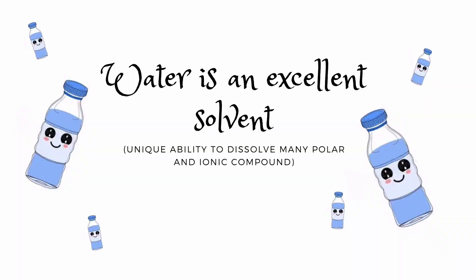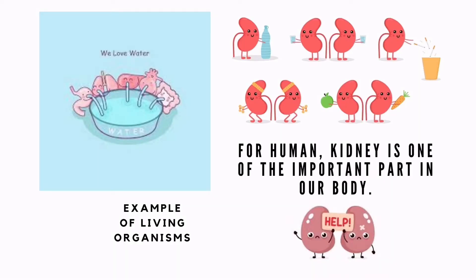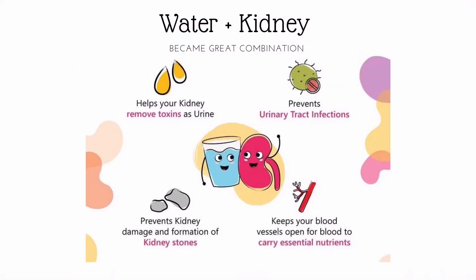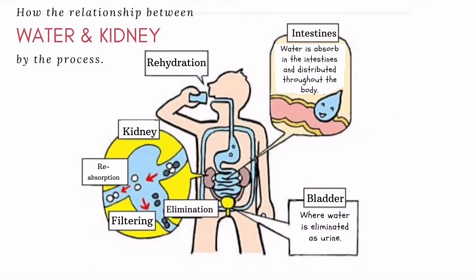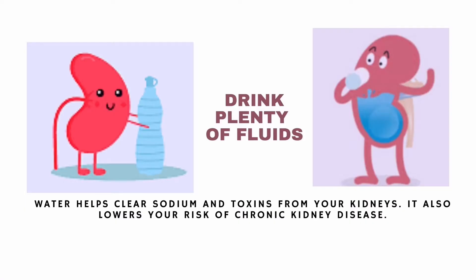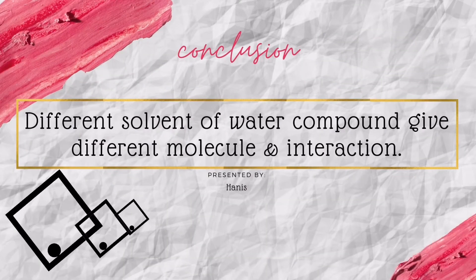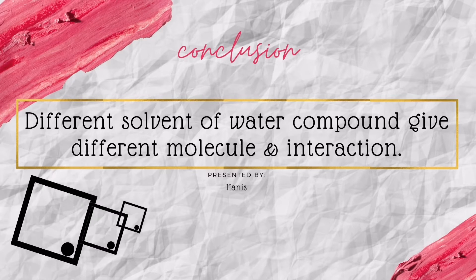Water is an excellent solvent with a unique ability to dissolve many polar and ionic compounds. For living organisms, the kidney is one of the most important parts of the human body. Water and the kidney make a great combination — it helps your kidney remove toxins as urine, prevents urinary tract infections, prevents kidney damage and kidney stones, and keeps blood vessels open for blood to carry essential nutrients. That is why we need to drink plenty of fluids. Water helps flush sodium and toxins from your kidneys and lowers your risk of chronic kidney disease. In conclusion, different solvents of water compounds give different molecules and interactions.